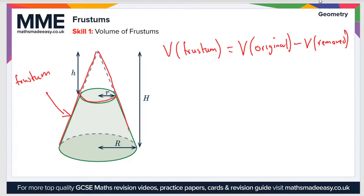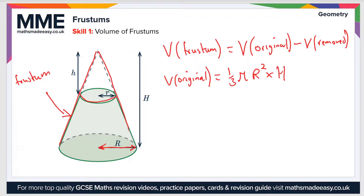That gives us the volume of the frustum. Using this example, V_original would be the volume of the original cone, and the volume of a cone is one-third π r² h. So that's one-third times π, and in this case it's capital R because that's the radius of the larger cone, times capital H for the height of the original cone. Then V_removed is the small cone — again one-third π r² h — but this time using the smaller radius and the height of the small cone removed.